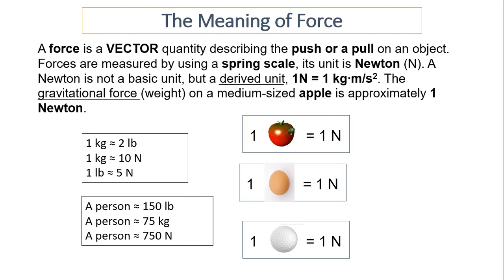The gravitational force, or weight, is how much force the Earth exerts on you. The force on a medium-sized apple is about one Newton — an egg and a golf ball are similar. We're more familiar with pounds: one kilogram is about two pounds and about ten Newtons, so one pound is about five Newtons. You need to memorize these conversions. An average person is about 150 pounds, which is about 75 kilograms, or about 750 Newtons.